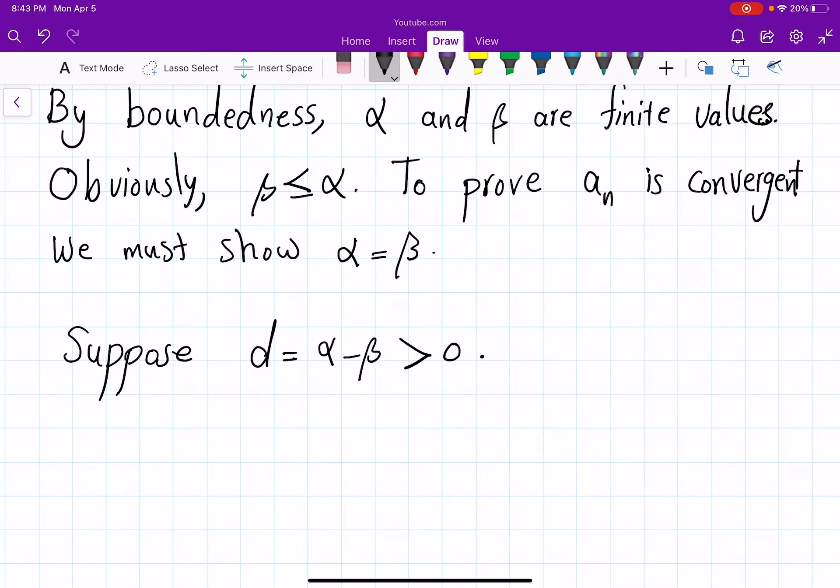What it tells you is the following then. Given any n natural number because α is limsup the sequence keeps visiting it and because β is liminf the sequence keeps visiting that as well on some other indices. But anyway, it is true that there exists n in natural numbers such that